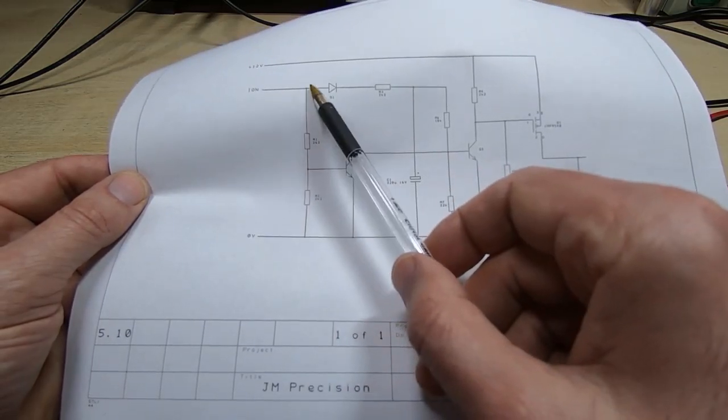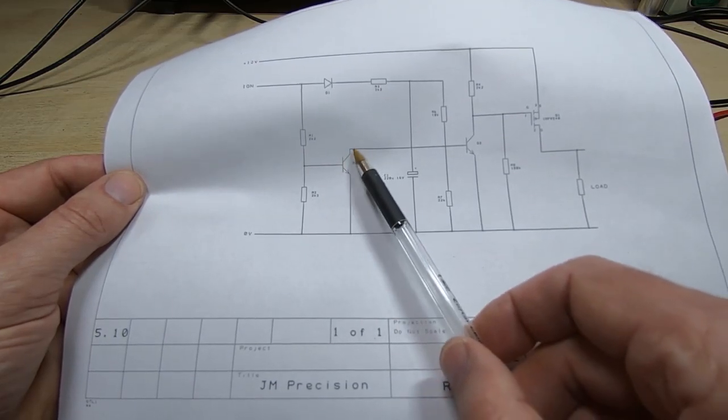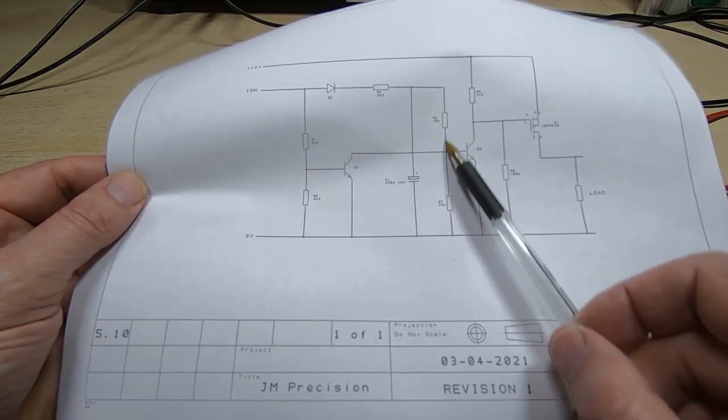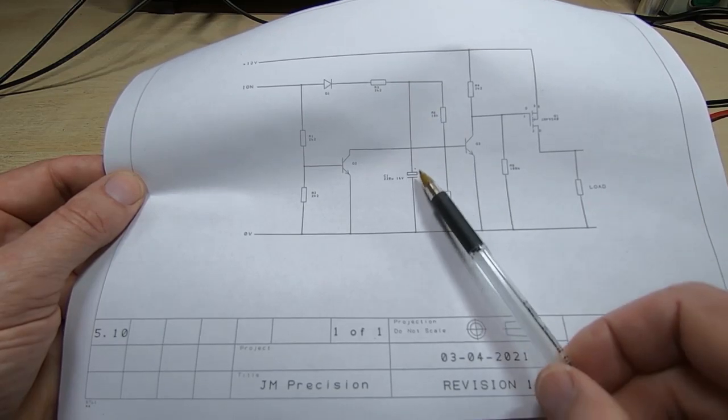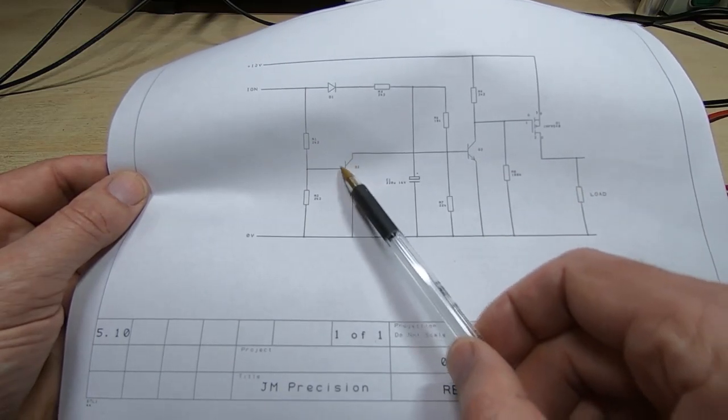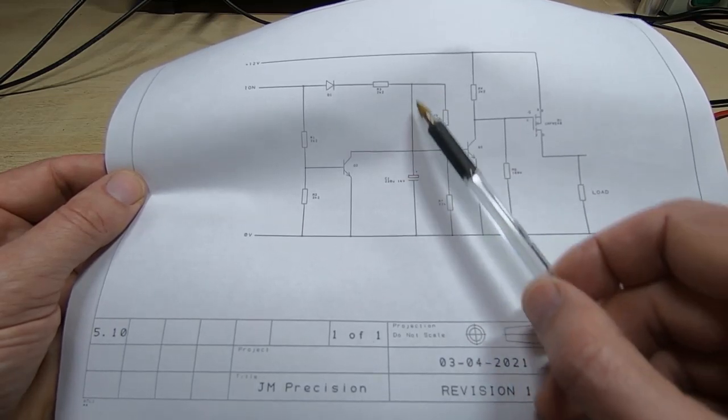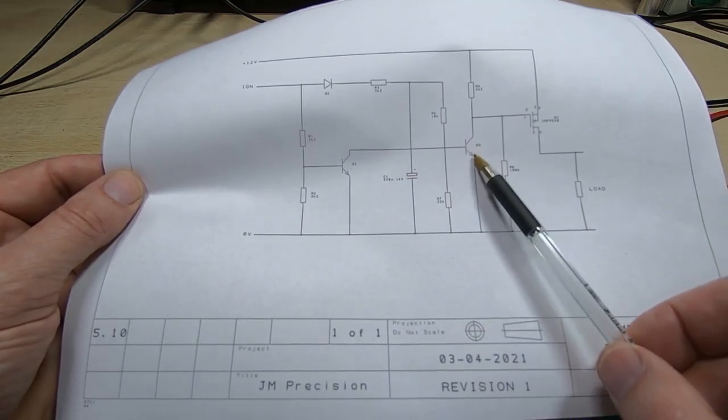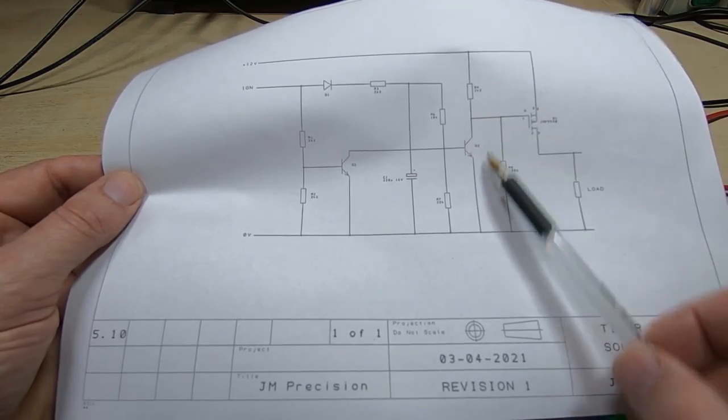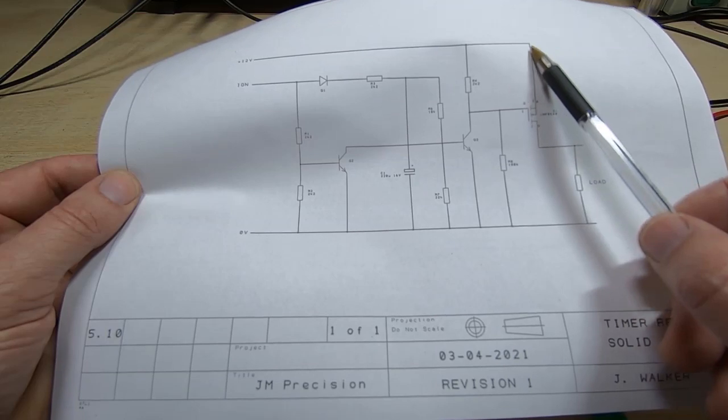When the ignition is turned off, this voltage disappears and so this transistor turns off and its collector floats. That allows the base of this transistor to be pulled high through this resistor because this capacitor is still charged up. It doesn't discharge through this route and it doesn't keep this transistor turned on because of the steering diode. So the voltage on the capacitor causes this transistor to turn fully on, and that pulls the gate of the MOSFET low and it turns the MOSFET on.